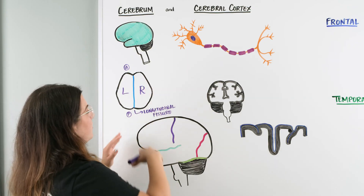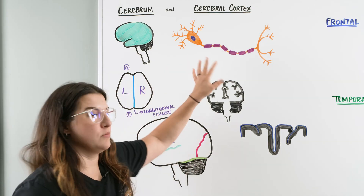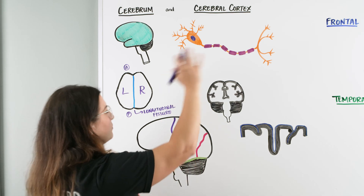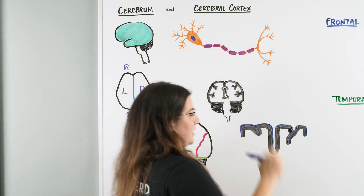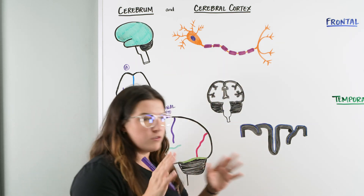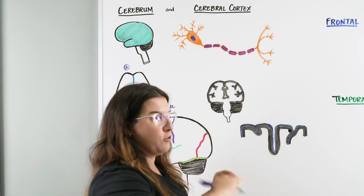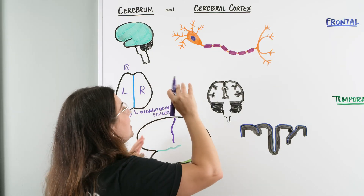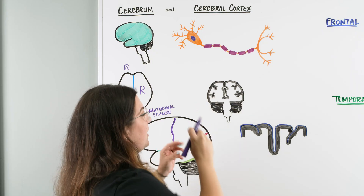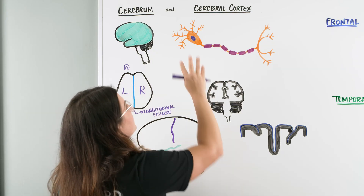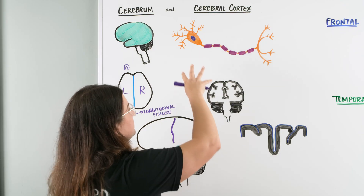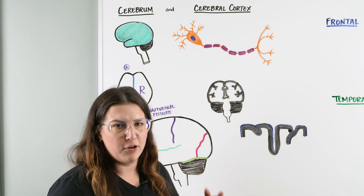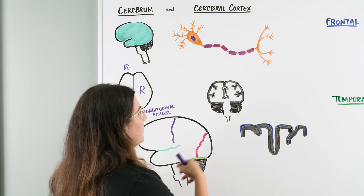So when we talk about our Cerebrum, we can talk about our Cerebral Cortex. Why are they kind of the same? Well the Cerebral Cortex is the two to five millimeter layer outside or around the Cerebrum. It is our area where we have a very dense amount of cell bodies. Our Cerebral Cortex is our gray matter that's on the surface of our Cerebrum.